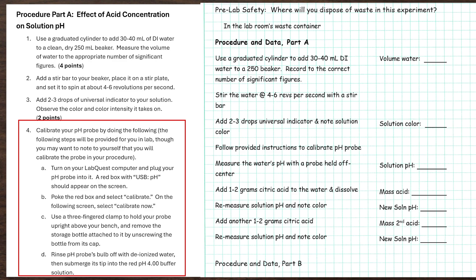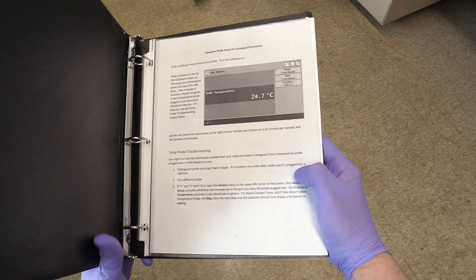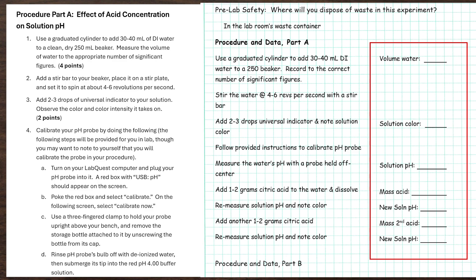In step 4 here, there's a big long list of things you would need to do to calibrate the pH probe, but I don't have any of them in my own procedure. This is because when it comes to computer stuff, we cut you a break and provide you with that in the lab room. To the right of my procedure steps, I've got my data template where I'll record volumes, masses, and other bits of numerical data, as well as any observations I have to make.